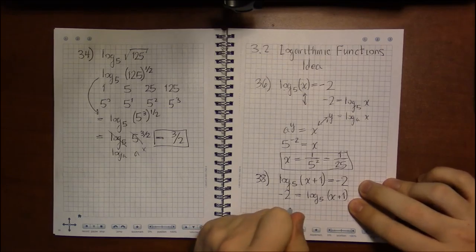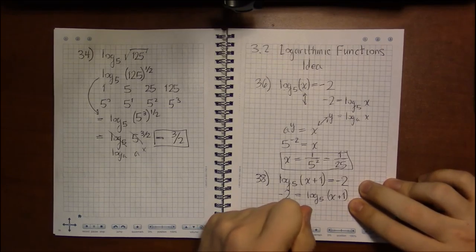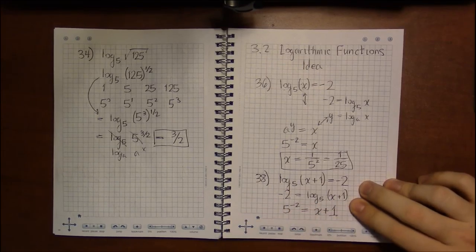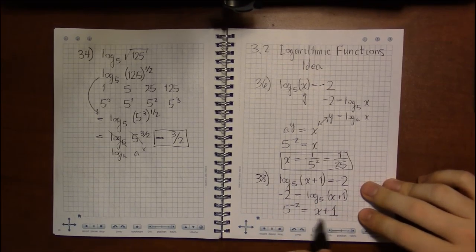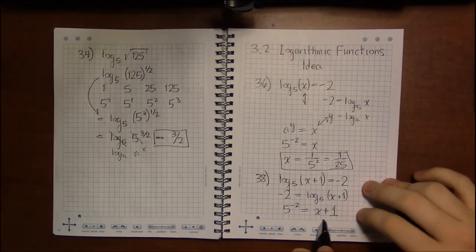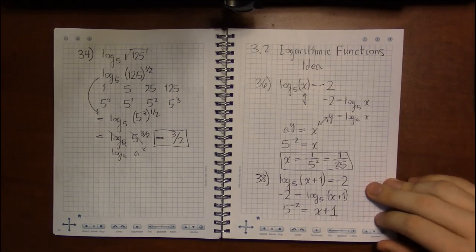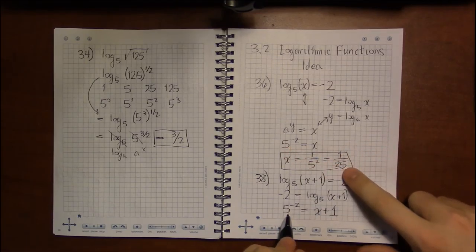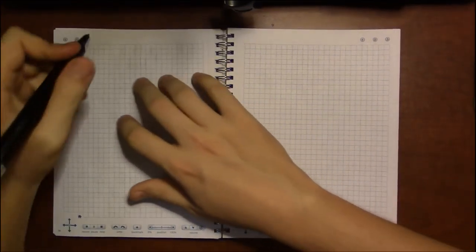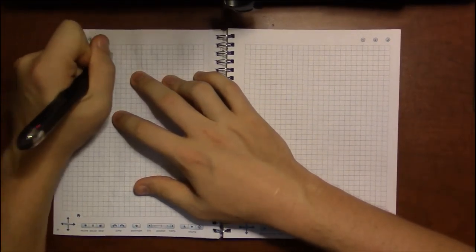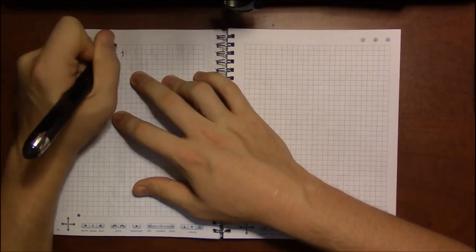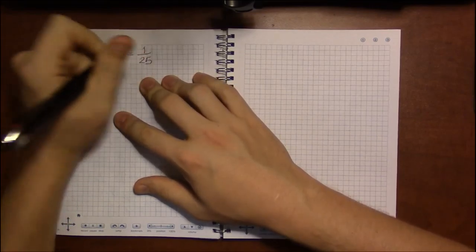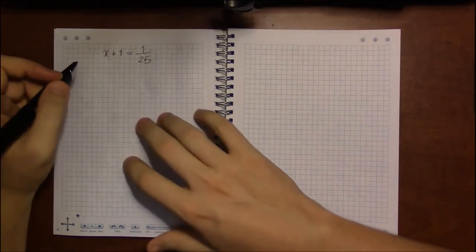So I'm going to switch the minus 2 and the 5 to make this 5 to the minus 2 equals x plus 1. And now I'm just solving something that's really familiar. I'm just going to have to subtract 1 from both sides, and I'll be done. And remember, we saw that 5 to the minus 2 is 1 over 25. So I'm going to rewrite this as x plus 1 on the left-hand side, and 5 to the negative 2 as 1 over 25, what we saw a little bit earlier.